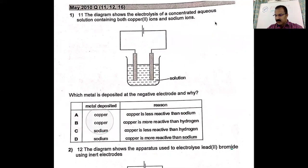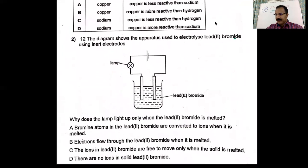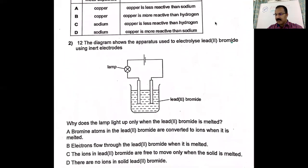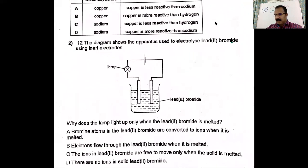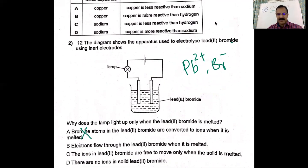Moving on to question two. The diagram shows the apparatus used to electrolyze lead bromide using inert electrodes. We have Pb²⁺ and Br⁻ ions. Why does the lamp light up only when the lead bromide is melted? Option A says bromine atoms are converted into ions when melted — that's not correct. Ionic compounds already have ions in the ionic lattice.